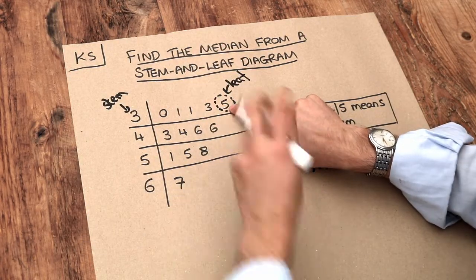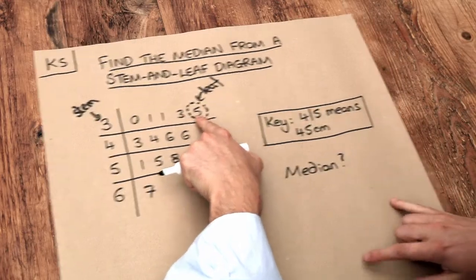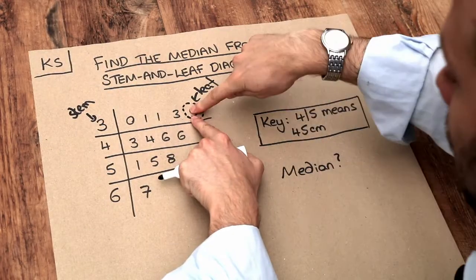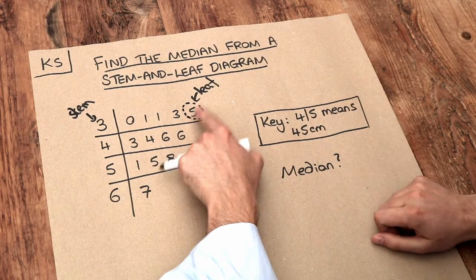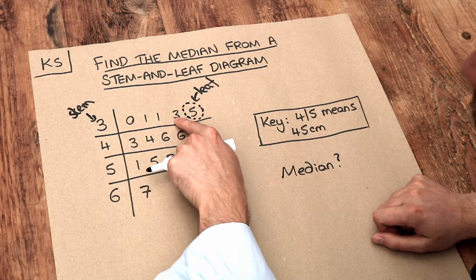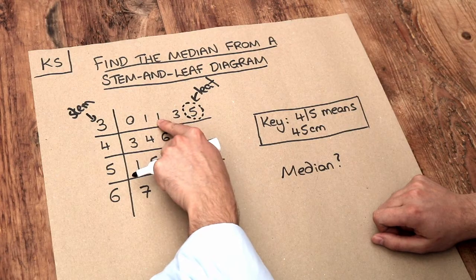So this value, if we look at the key, 35 like that means 35 centimeters there. So that represents 35 centimeters, that represents 33 centimeters, 31 centimeters, etc.